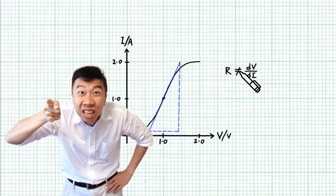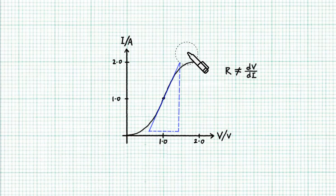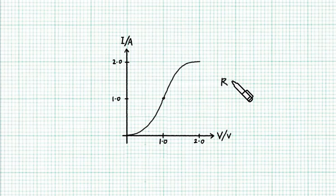Now resistance is not dV/dI, so the gradient of the tangent has nothing to do with the resistance at all. So let's wipe this misconception from our memory. So what is resistance? Resistance is the ratio of the voltage to the current.